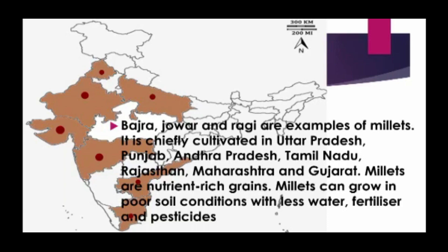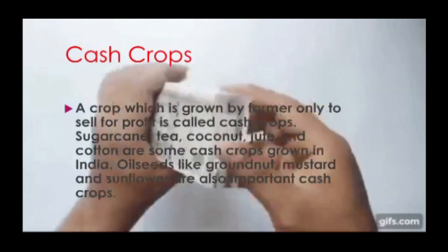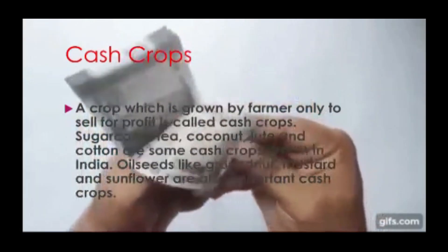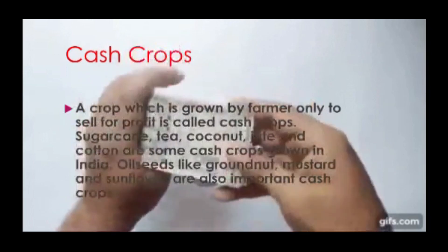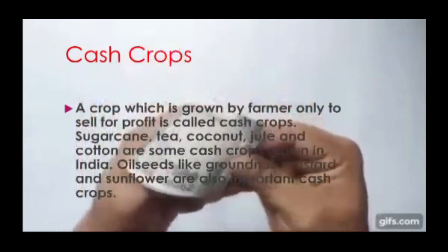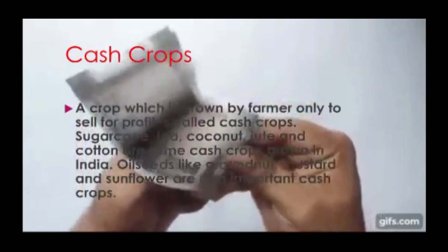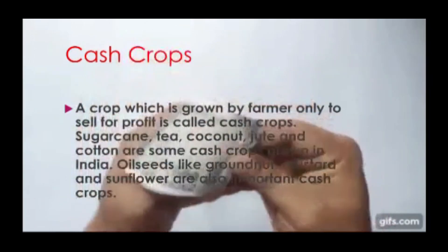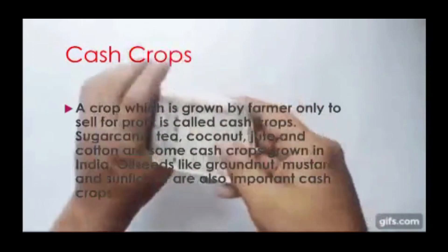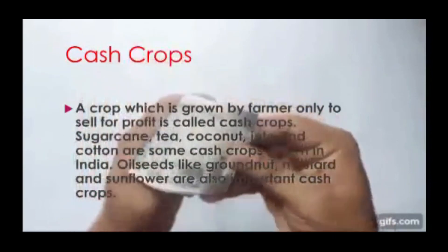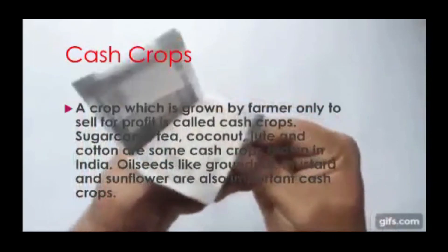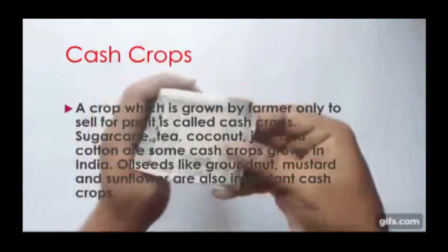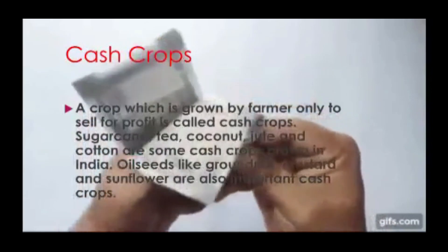A crop which is grown by farmers to sell for profit is called a cash crop. Sugarcane, tea, coconut, jute, and cotton are some of the cash crops grown in India.